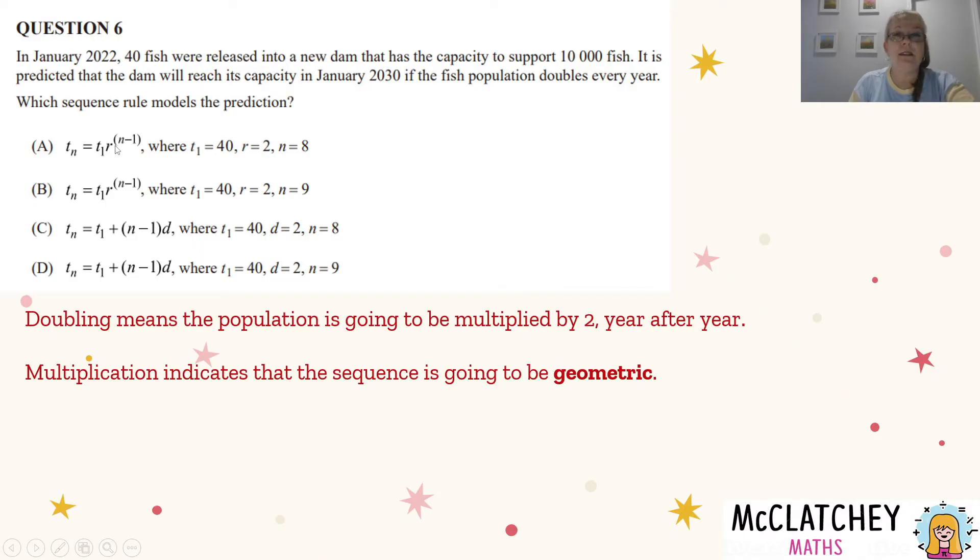This is geometric because it has a power. This is geometric because it has a power. This is arithmetic and arithmetic because there are no powers. We're adding on a part each year with that addition. So we can straight out rule out C and D because they're the wrong kind of sequence.